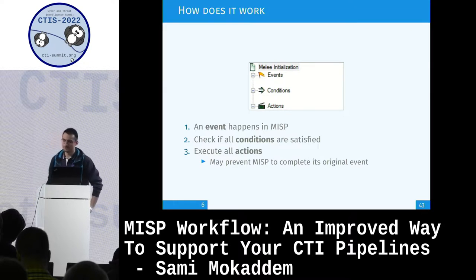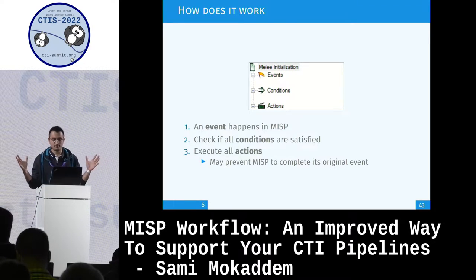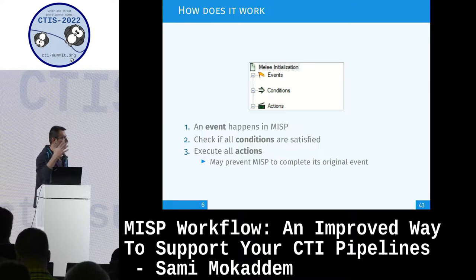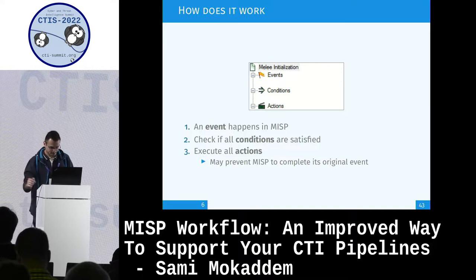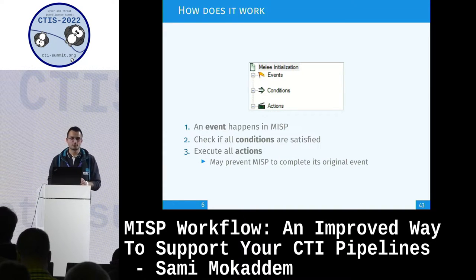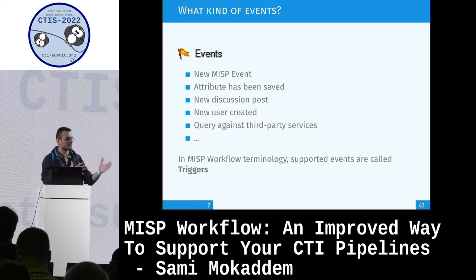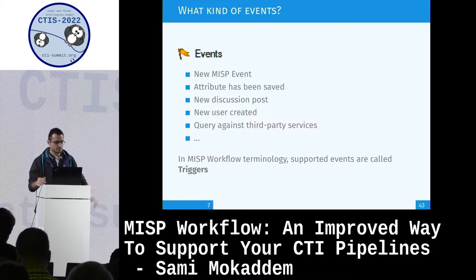Some fundamentals first. This is basically how it works in a simplified way: an event happens in MISP - not a MISP event, but something caused by a user or script interacting with MISP. Then it runs optional conditions to check if they are satisfied, and if so, executes potential actions. What kind of events can happen? Basically anything: new event created, attribute created, tag added, attribute modified, discussion posted, proposal created, new user created - basically anything that could generate a log entry.